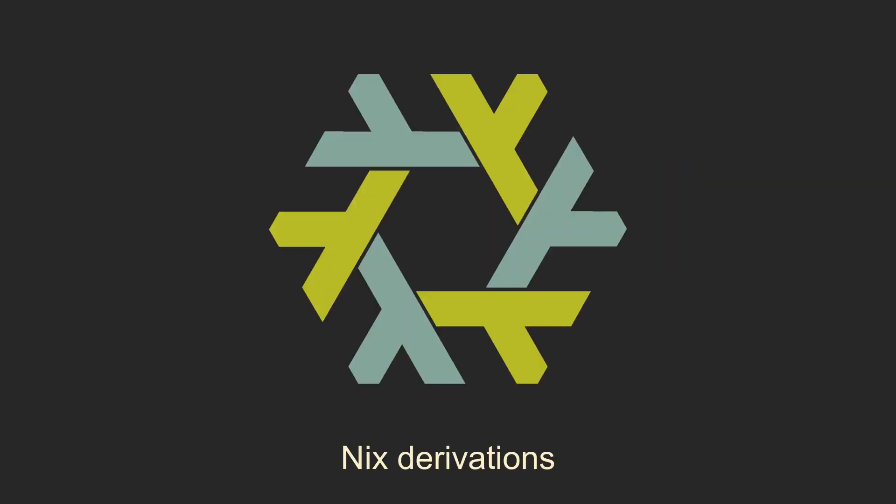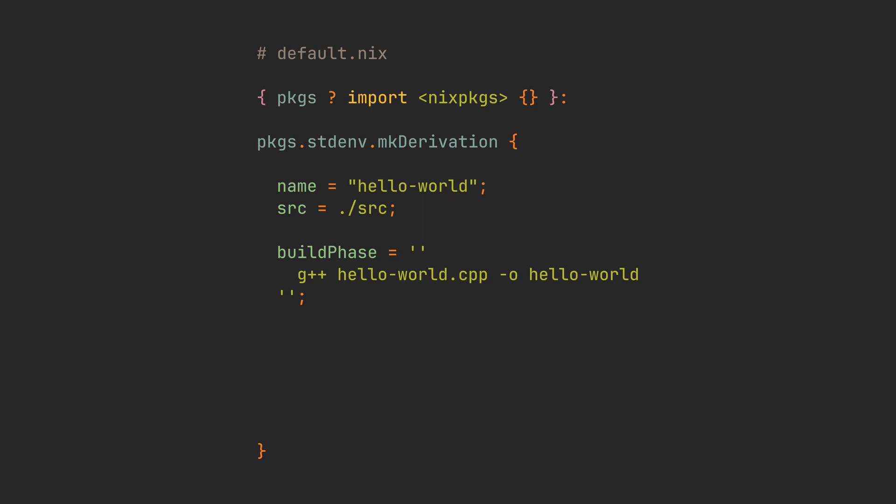There are also a bunch of optional keys, some of which we are going to take a look at. The derivation has multiple phases, which are essentially just bash scripts that it runs to unpack, build, or install the package. Let's define the build phase for this package — it assumes that we are already in the src directory, so all we have to do is run the g++ command to get a compiled binary. But that's not enough. We want to add an install phase to tell Nix that we want the user to be able to execute the binary. All NixOS packages store their executable binaries in the out/bin directory, so we first make sure that it exists by running mkdir -p $out/bin.